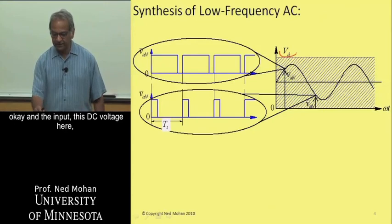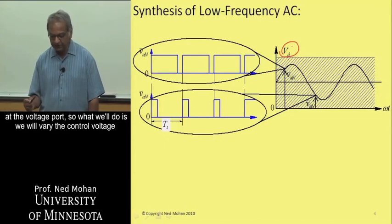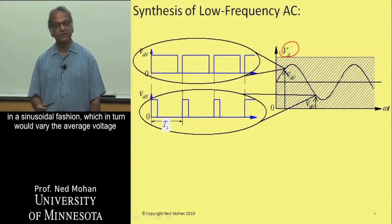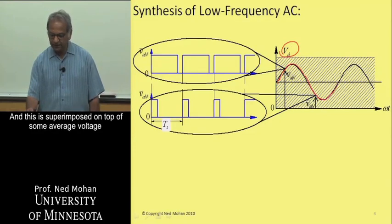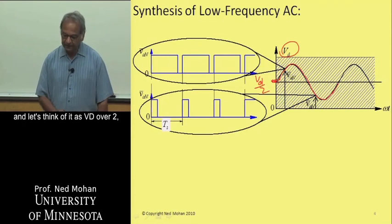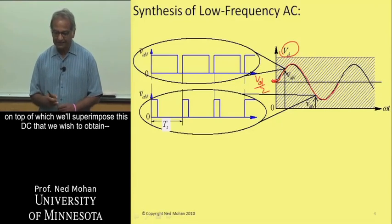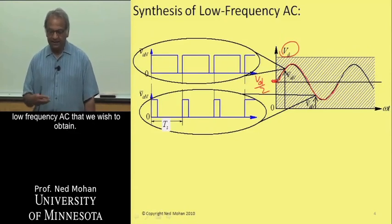And the input is this DC voltage here at the voltage port. So what we'll do is we will vary the control voltage in a sinusoidal fashion, which in turn would vary the average voltage that appears across the current port to vary in this sinusoidal manner shown here. And this is superimposed on top of some average voltage, let's think of it as Vd over 2. So that will be the common mode voltage on top of which we will superimpose this AC, low-frequency AC that we wish to obtain.